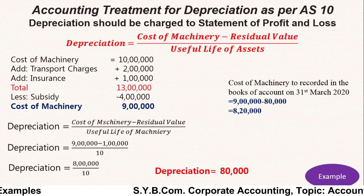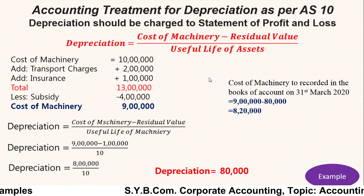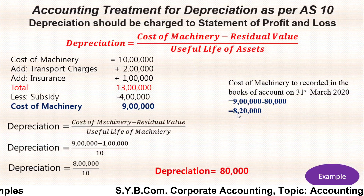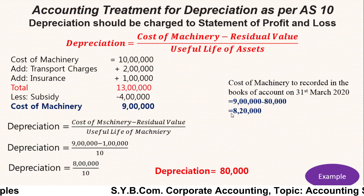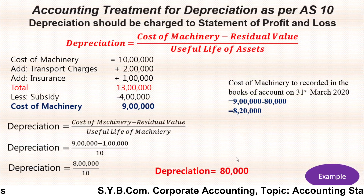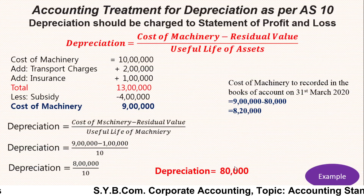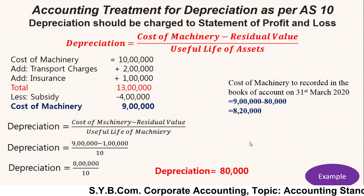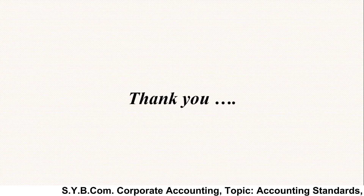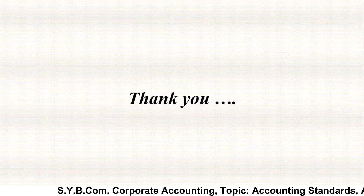The value comes to rupees 8 lakh 20,000, which should be recorded in the books of accounts after charging depreciation of rupees 80,000. Thank you very much. In the next example we will see another aspect of AS 10.